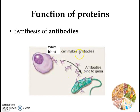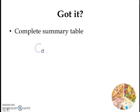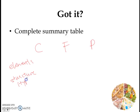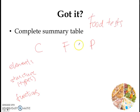Proteins are also used to make antibodies, which are very important in the defense of our body against harmful organisms. White blood cells make antibodies that bind to germs and disable them. So with that, we've had a look at carbohydrates, fats, and proteins — their elements, structure, and functions. I'd like you to look at your notes and complete the summary table. In the next lesson, we'll be looking at food tests: how can we test for the presence of carbohydrates, fats, and proteins in different foods?